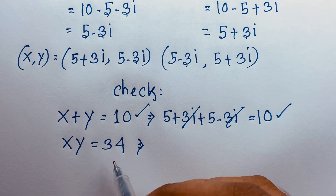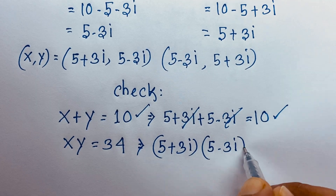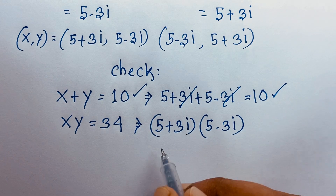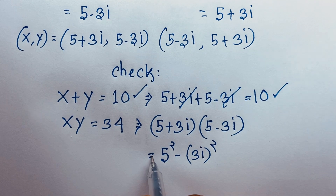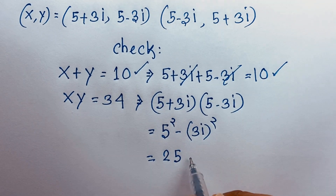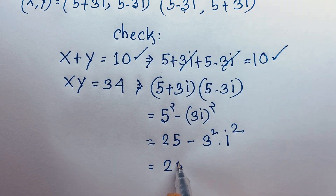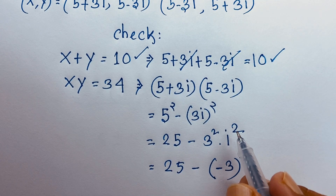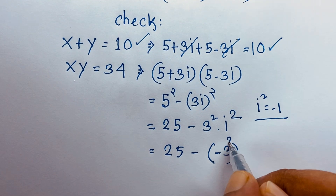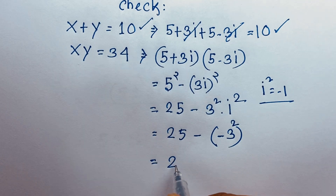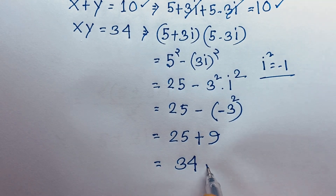Now verifying xy equals 34: x is 5 plus 3i and y is 5 minus 3i. Remember this is of the form (a plus b)(a minus b), which equals a squared minus b squared. So this is 5 squared minus 3 squared times i squared, which is 25 minus 9 times i squared. Since i squared equals negative 1, this becomes 25 minus (negative 9), which is 25 plus 9 equals 34. Left-hand side and right-hand side are both equal.